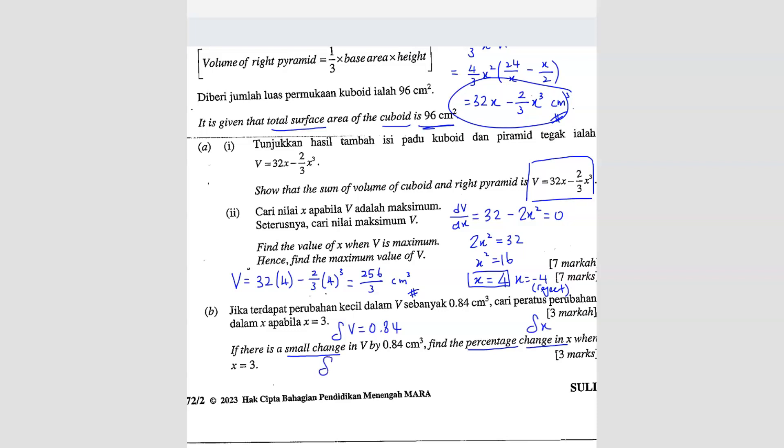We know that ΔV/Δx should be equal to dV/dx. This is the formula we always use. So dV/dx we have already found, which is here. But we want to know what is the dV/dx when x = 3. So we have to substitute into this equation, the dV/dx equation. So dV/dx = 32 - 2 × 3². So this one you should get 14. 32 minus 3² is 9 times 2, 18, so you get 14.